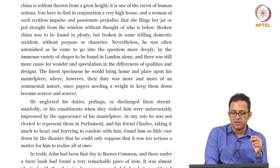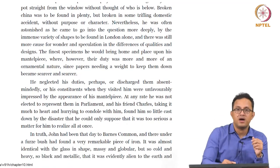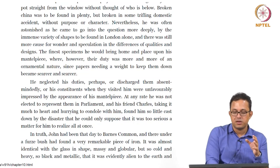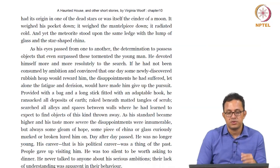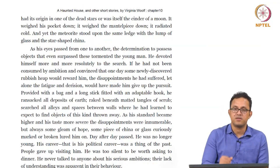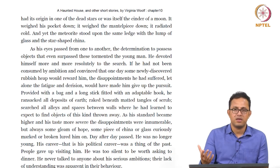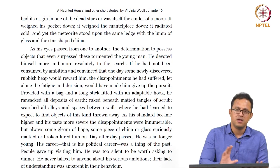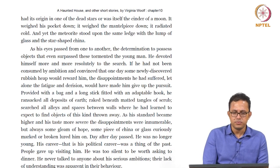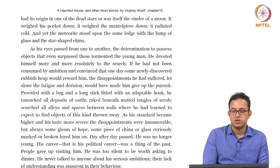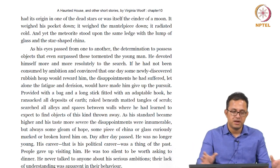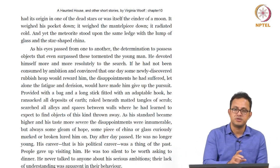'In truth, John had been that day to Barns Common and there under a fern bush had found a very remarkable piece of iron. It was almost identical with the glass in shape — messy and globular — but so cold and heavy, so black and metallic, that it was evidently alien to the earth and had its origin in one of those dead stars, or was itself the cinder of a moon.' He found a little piece of iron almost celestial in quality, perhaps from an asteroid — this is what is consuming his imagination. 'It weighed his pocket down, it weighed the mantelpiece down. It radiated cold — and here the meteorite stood upon the same ledge with the lump of glass and the star-shaped china.'